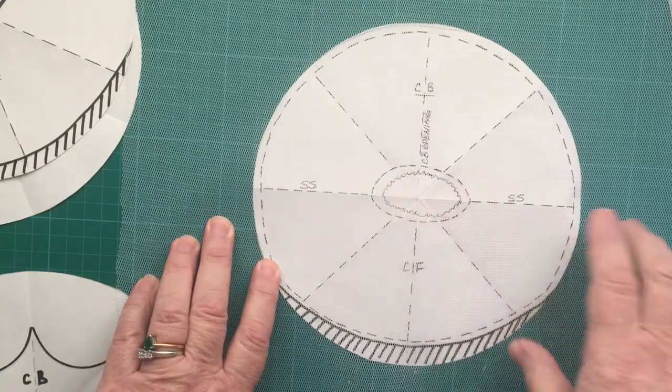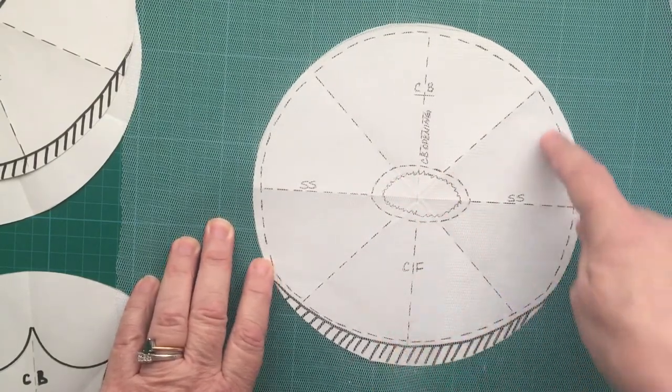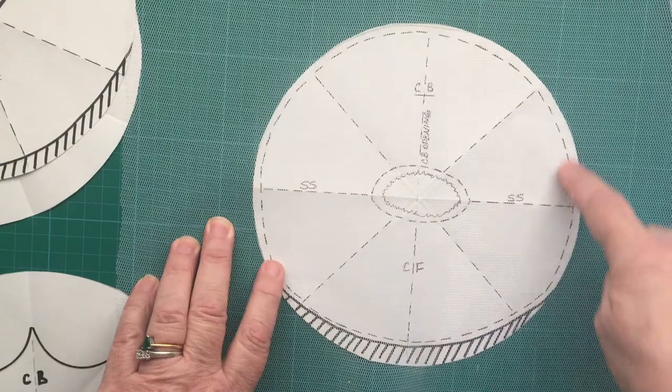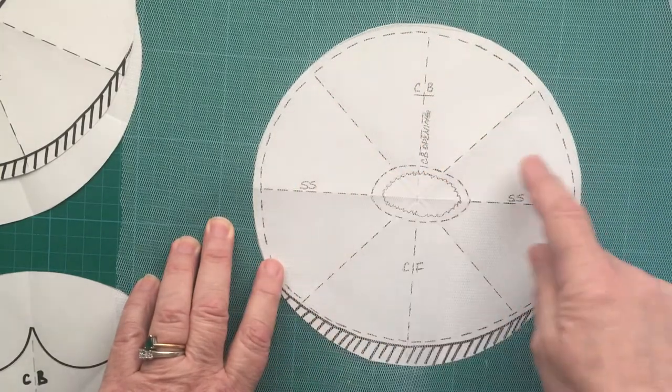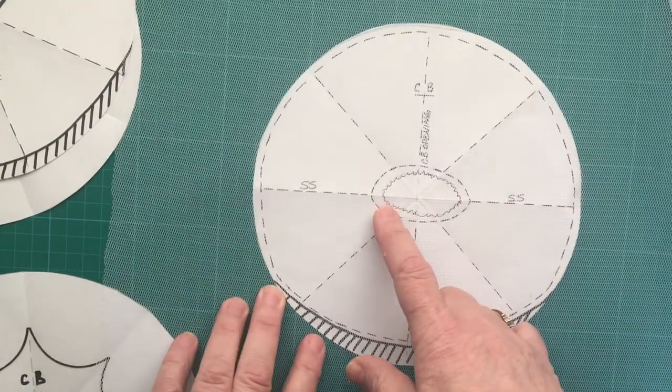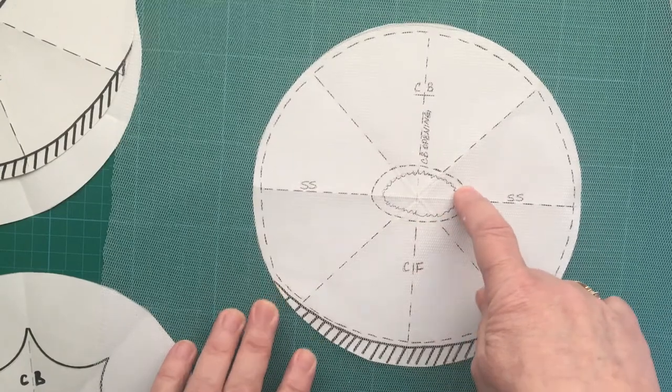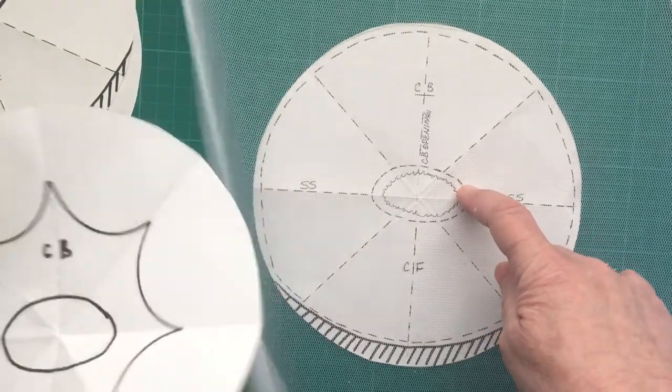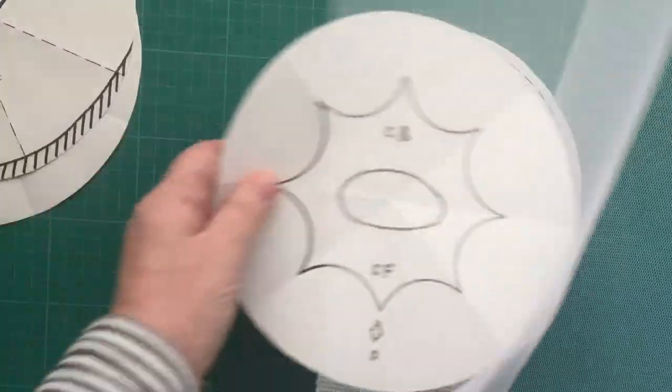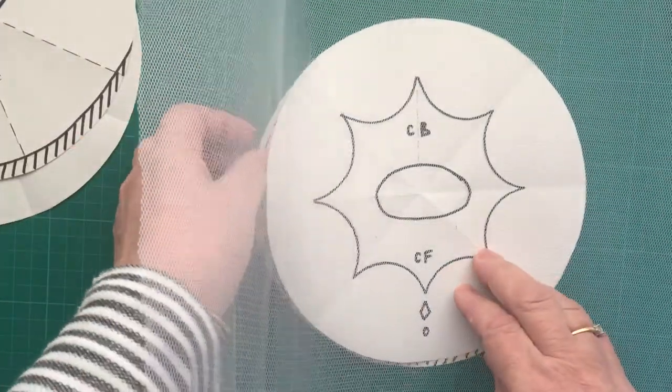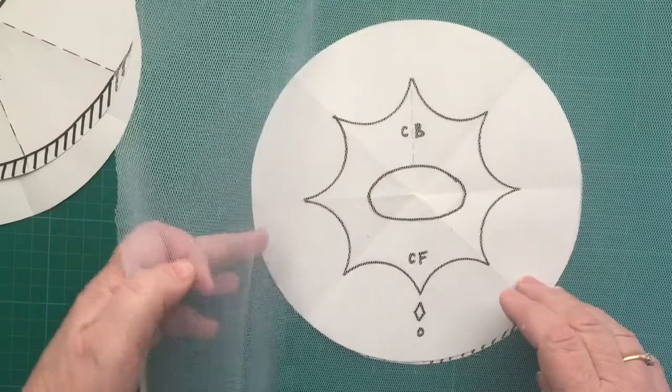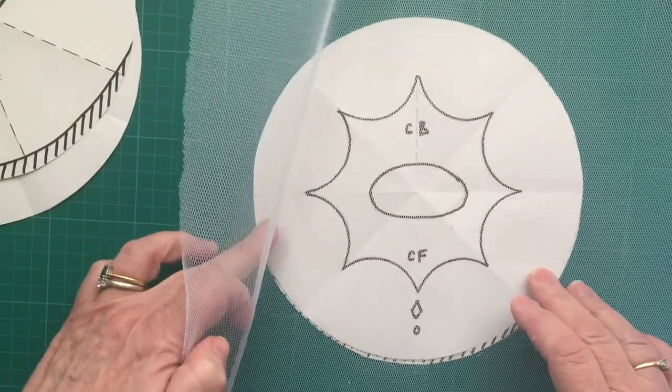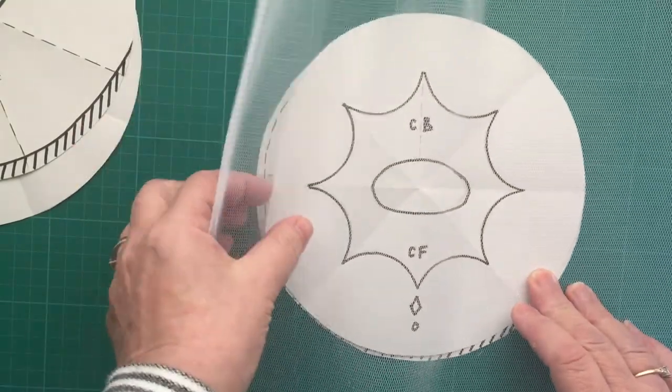Don't cut this out yet, just thread mark it all. So your outer ring, your lines, your high hip where the body goes in, and then if you want to map out as well you can map out the shape that you're going to do and just transfer all this information by thread marking it.